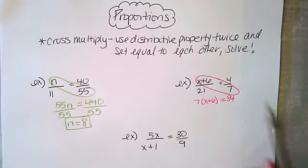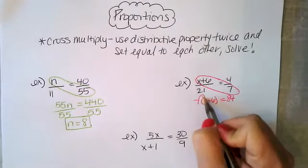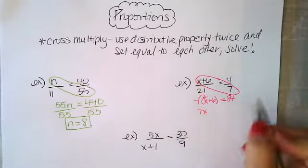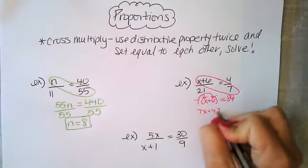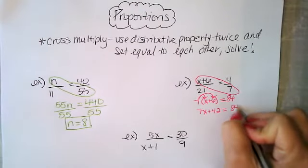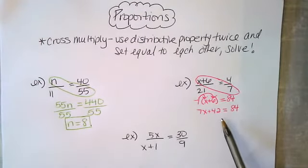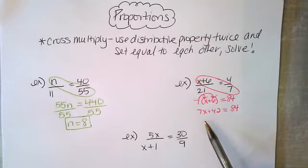Now I'm going to use the distributive property here. 7 times x gives me 7x. 7 times 6 gives me 42, which is equal to 84. Now we're going to use opposite operations again to solve for our unknown.